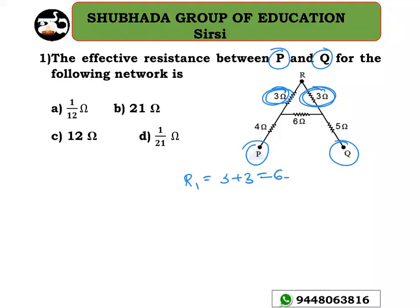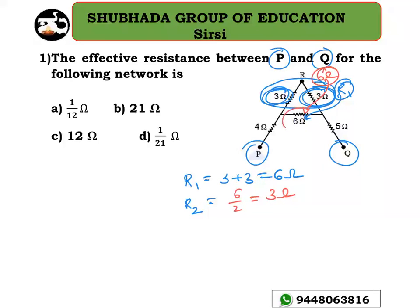3 ohm plus 3 ohm equals 6 ohm. Now this R1 is in parallel with a 6 ohm resistor. Let me take that as R2 — the equivalent of 6 ohm in parallel with 6 ohm is 6 divided by 2, which equals 3 ohm.